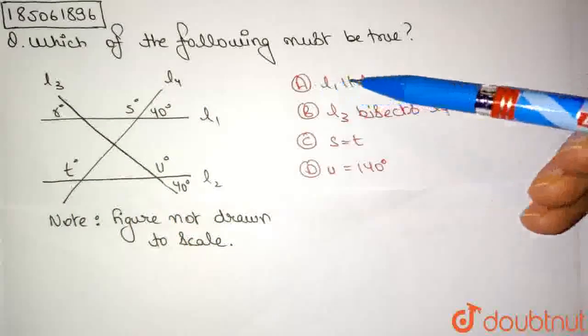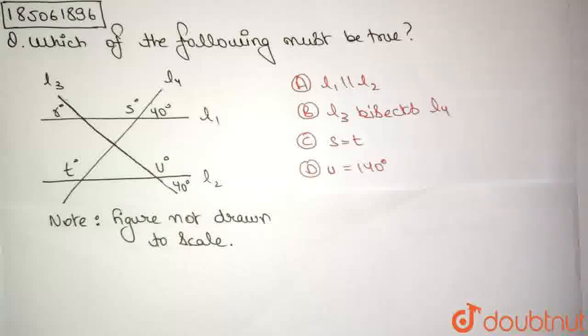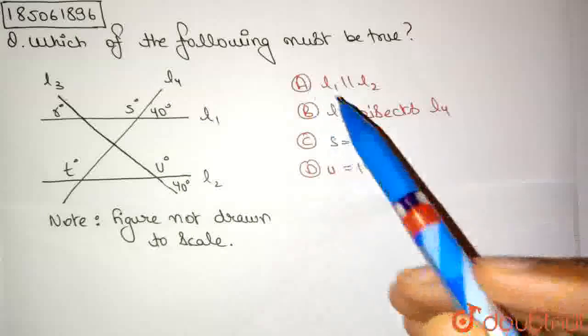Now option A states L1 is parallel to L2. But since it has not been given to us in the question, we cannot say that L1 is parallel to L2. As it is also said that the figure is not drawn to scale, we cannot confirm this. So option A cannot be true.